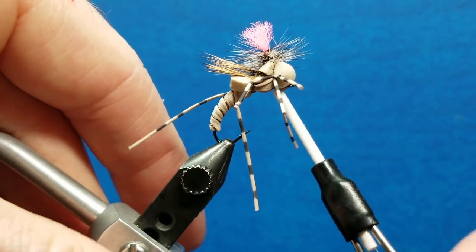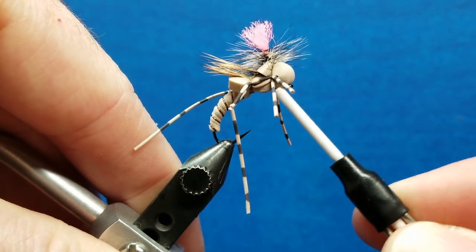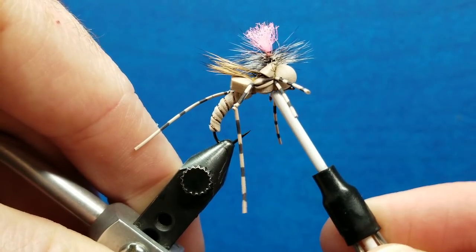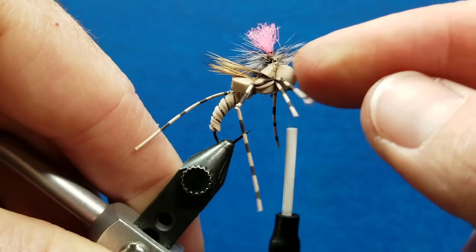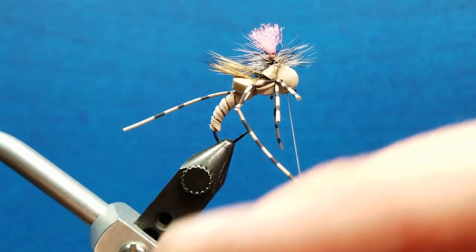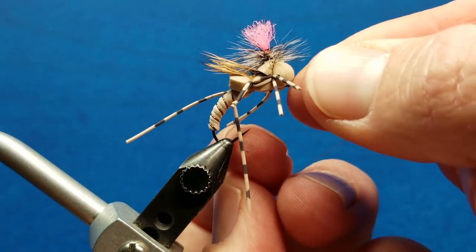Stick the nose of my bobbin right up in here. I'm going to go right underneath the eye of the hook. Go around about half a dozen times. And because of this blunt head here, I'm not going to actually whip finish it. I'm going to throw in two quick half hitches. And then I'll just hit it with some zap-a-gap.